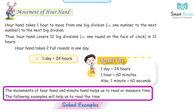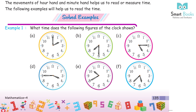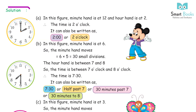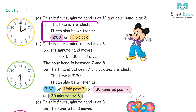Solved Example 1: What time does the following figure of the clock show? Solution A: In this figure, the minute hand is at 12 and the hour hand is at 2. The time is 2 o'clock. It can also be written as 2:00 or 2 o'clock.